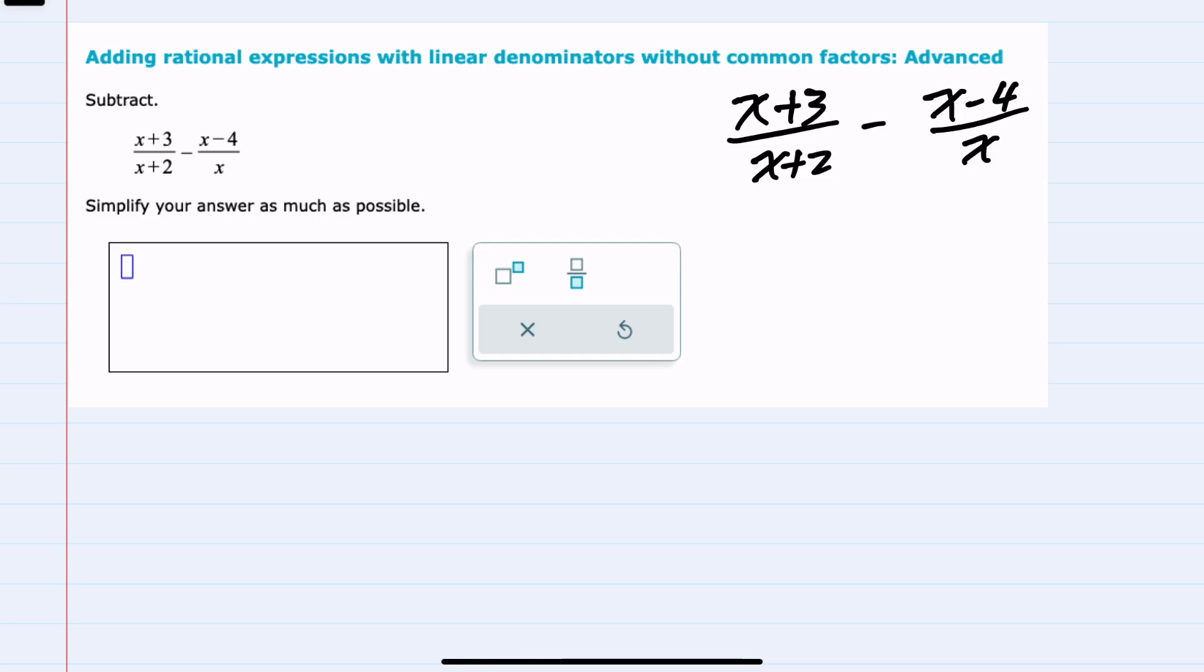As with any time we're adding or subtracting fractions, our first step will be to find our common denominator. Looking at these two denominators, x plus 2 and x, they are both factored as much as possible and they do not have any common factors. So our least common denominator will be the product of those two denominators, x times x plus 2.